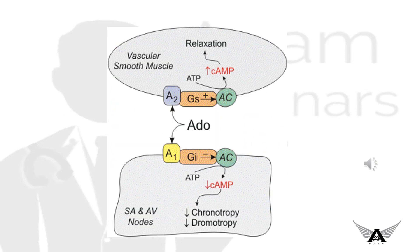Adenosine acts on specific G-protein-coupled adenosine receptors. It activates ACh-sensitive potassium channels in the SA node, AV node, and atrium, causing shortening of APD, hyperpolarization, and decreased automaticity. It also inhibits the effects of increased cAMP with sympathetic stimulation, thereby decreasing calcium currents.